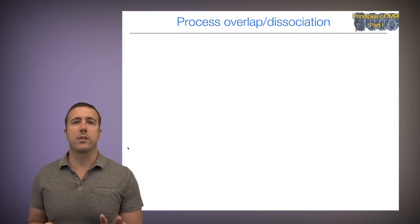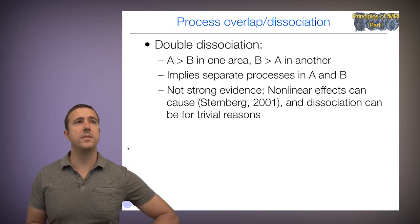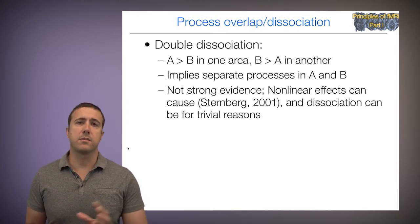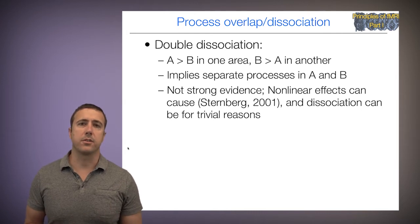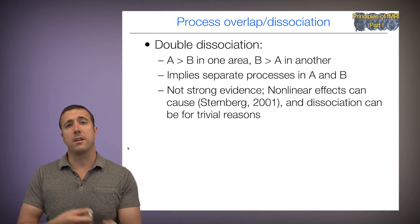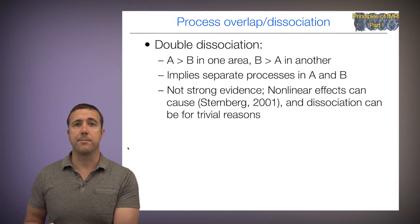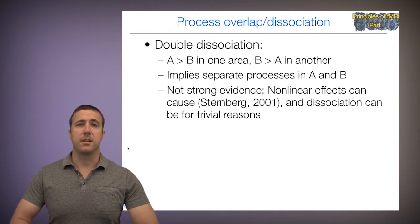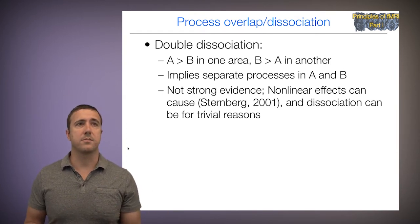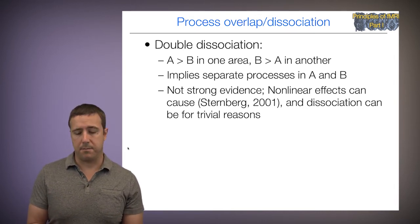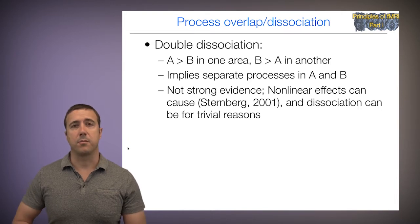Now let's look at a process overlap with dissociation design. One way of thinking about this is in terms of double dissociation, which goes back to the neuropsychology literature from way back. The idea is that task A activates more than task B in one area, and you can find another area of the brain in which B activates more than A, implying separate processes. This isn't knock-down evidence for separable processes because nonlinear effects can cause that double dissociation, but it's pretty good evidence on process separability.